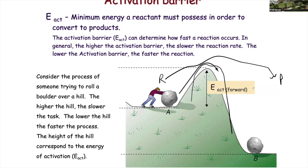On the other hand, if you're going from point A to point B and there's just a little bump, it takes no time at all to get across that barrier and move over to the product. In kinetics, the higher the activation barrier, the slower the reaction; the lower the activation barrier, the faster the reaction.